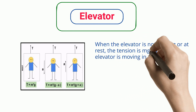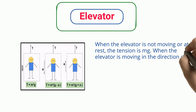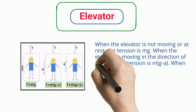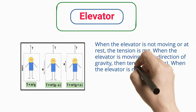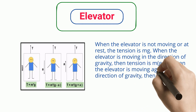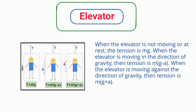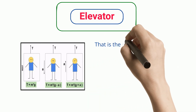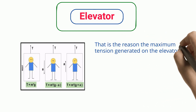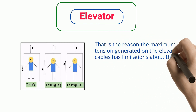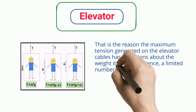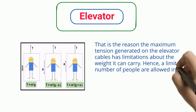When the elevator is moving in the direction of gravity, then tension is M(g−a). When the elevator is moving against the direction of gravity, then tension is M(g+a). That is the reason the maximum tension generated on the elevator cables has limitations about the weight it can carry. Hence, a limited number of people are allowed in the elevator.